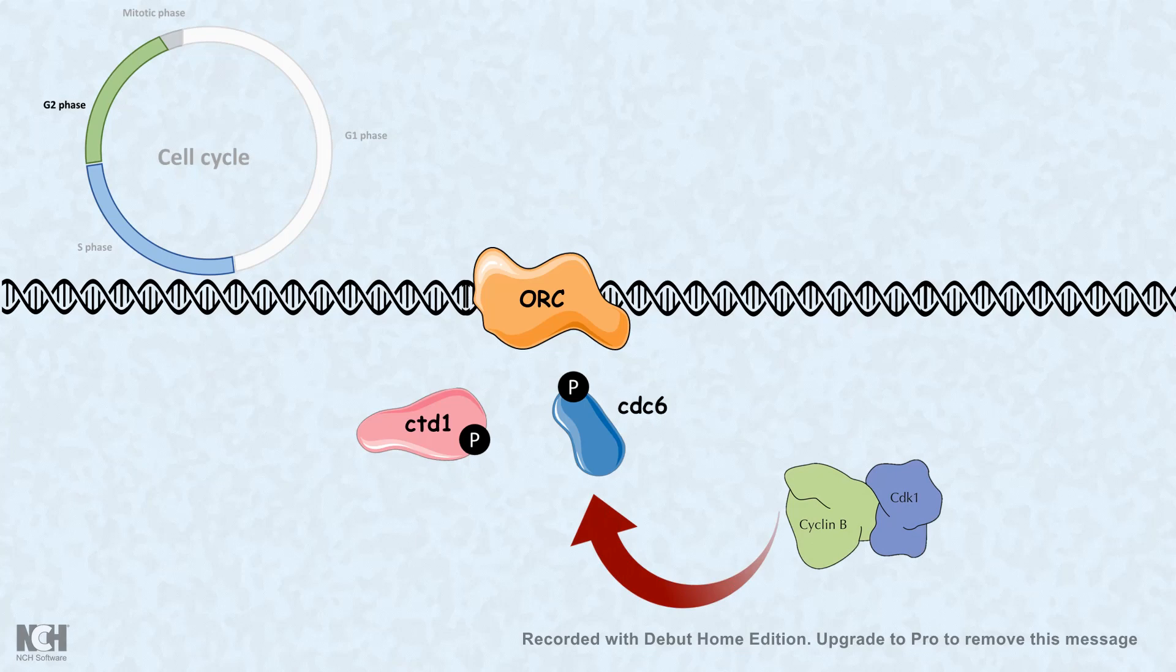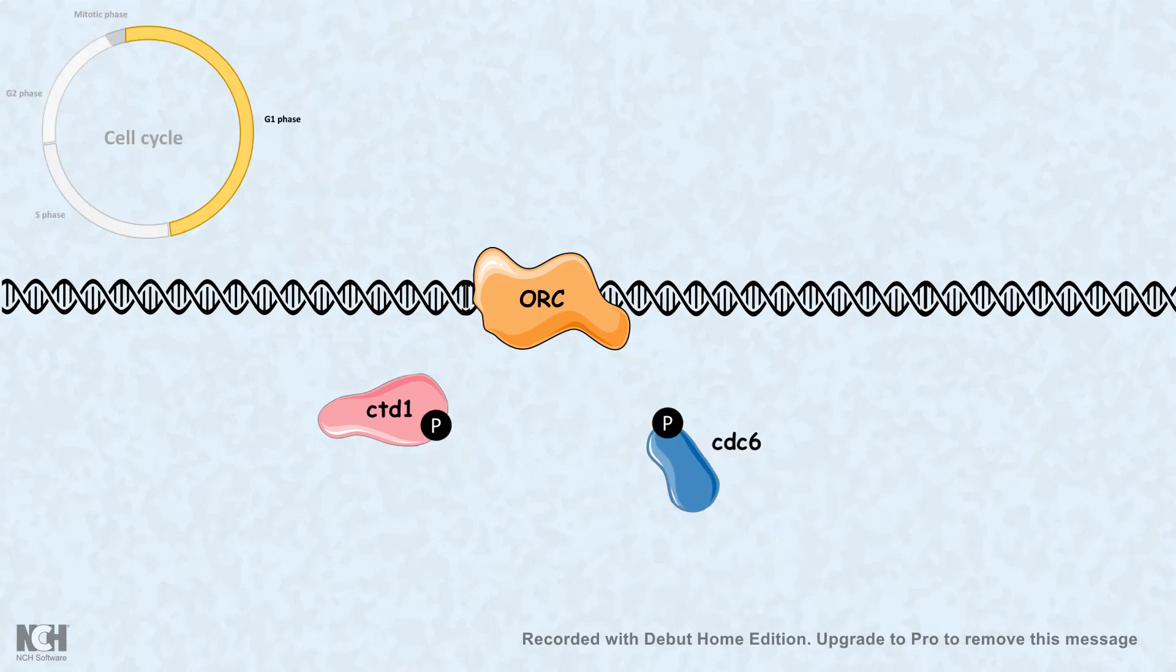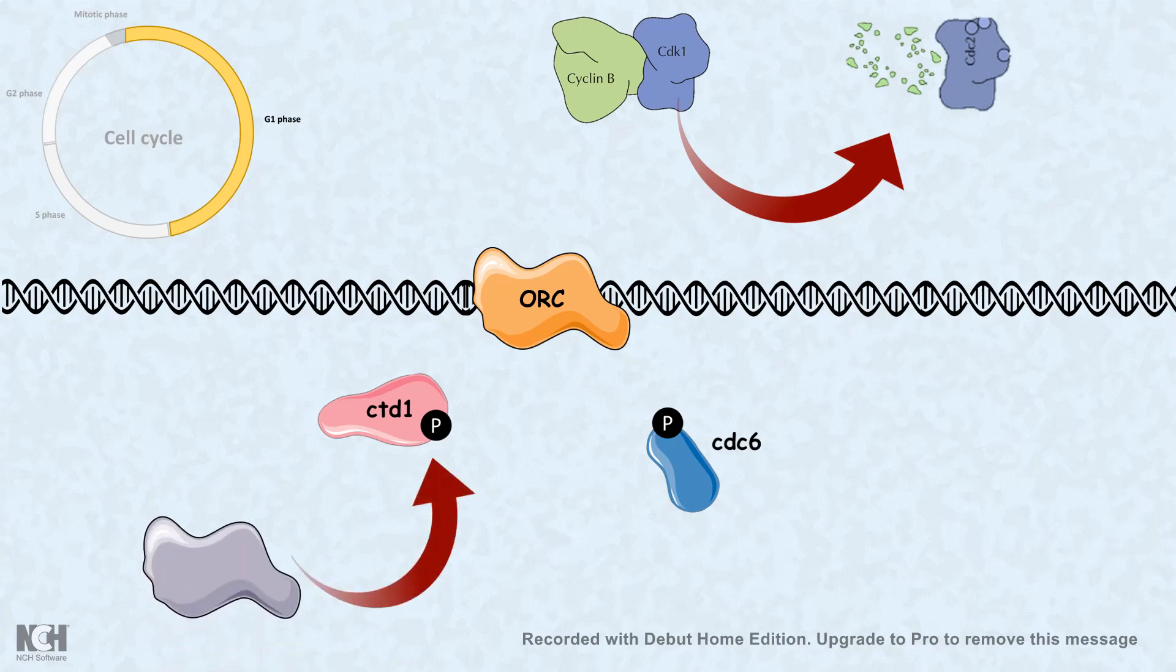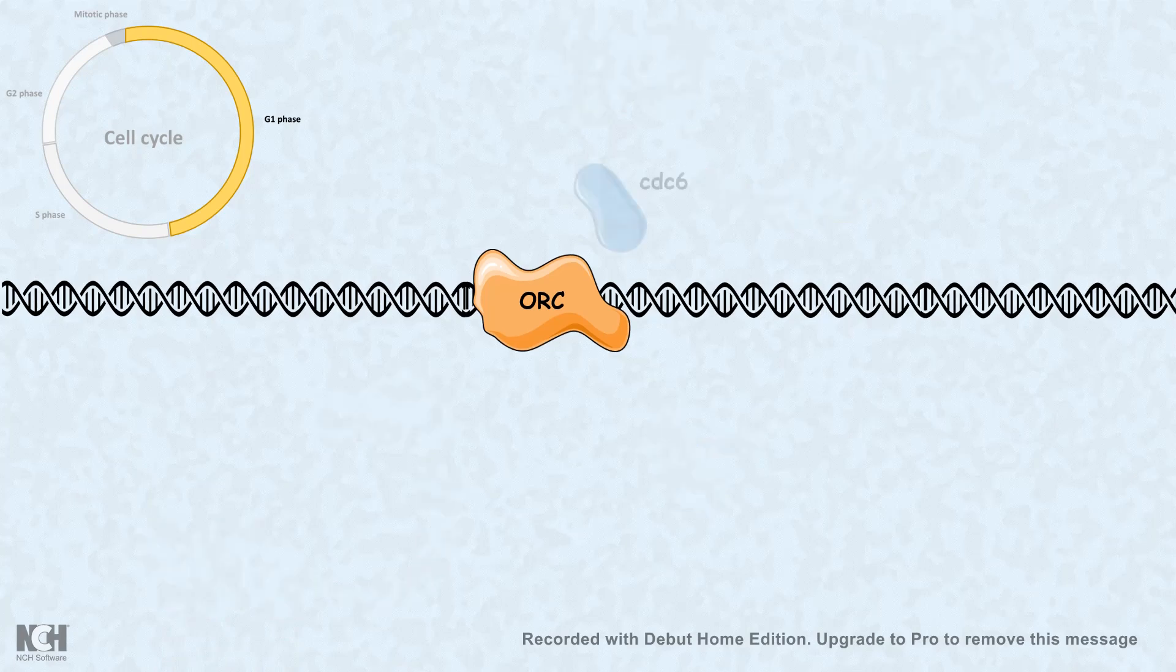As a result, they cannot get associated with ORCs. But at the end of G2 phase and the end of mitotic phase and the beginning of G1 phase, cyclin B is gone because cyclin B is degraded by anaphase promoting complex. When the kinase level is low, phosphatase can act on these helicase loader proteins and dephosphorylate them. Once dephosphorylated, they can reassociate with the pre-replicative complex and wait for the S phase cyclin to phosphorylate them, and that is how they can fire again.